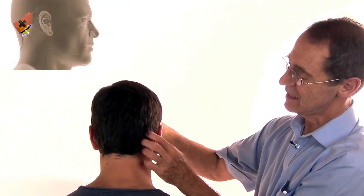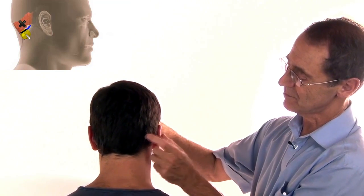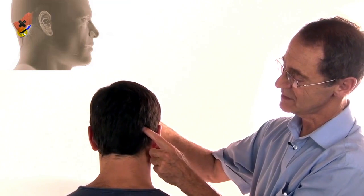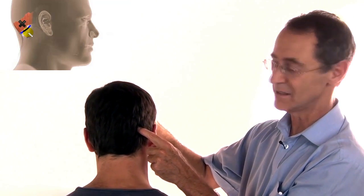And somewhere in the middle of this, from the ear to the back of the head, somewhere in the middle of that, is where the occipitalis muscle lives.